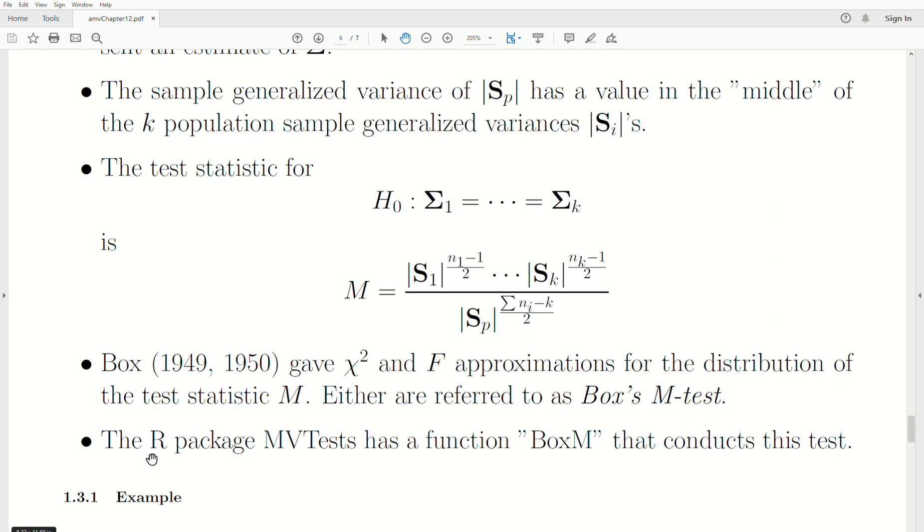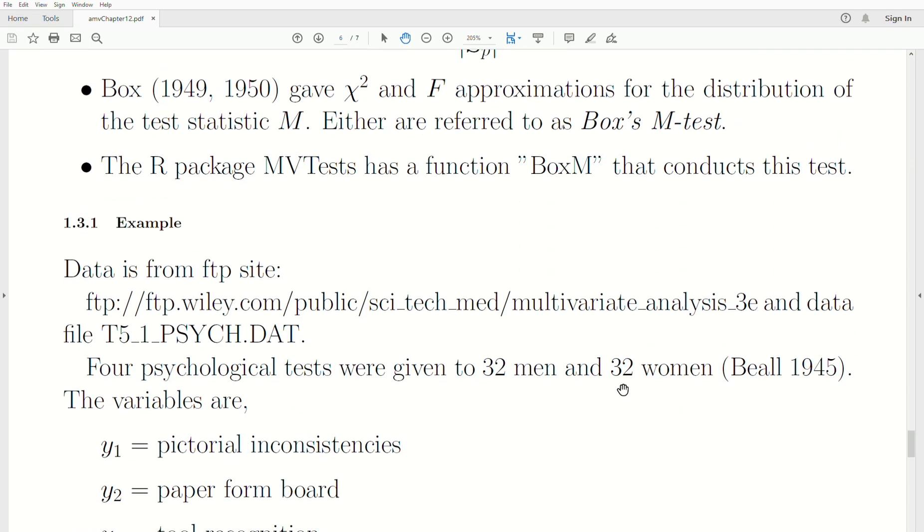And now we're going to look at an R package, MVTests, multivariate test. And it has a function, BoxM, that conducts this test. And so there's an FTP site given by this URL where there's just tons of data. And we're going to look at the site data.